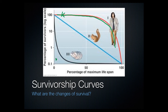The opposite is an R-selected species, where they have a ton of babies that die off very rapidly. The remainder kind of live out the rest of their lives. In a K-selected species, a lot of the kids live and make it to their maximum lifespan. In an R-selected species, there's a huge die-off to start, and then those that survive carry on to reproduce.